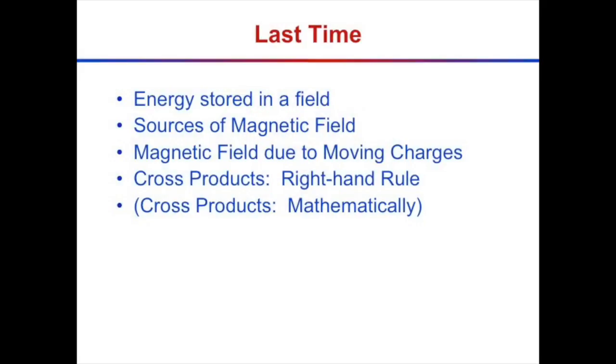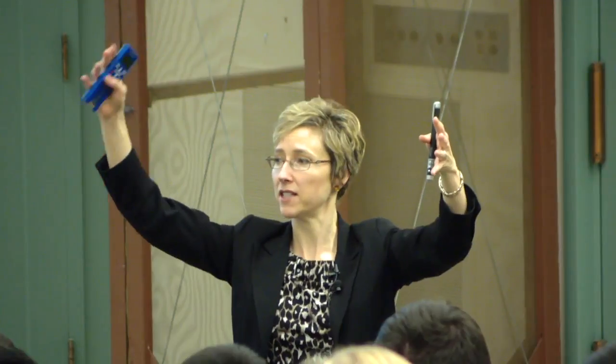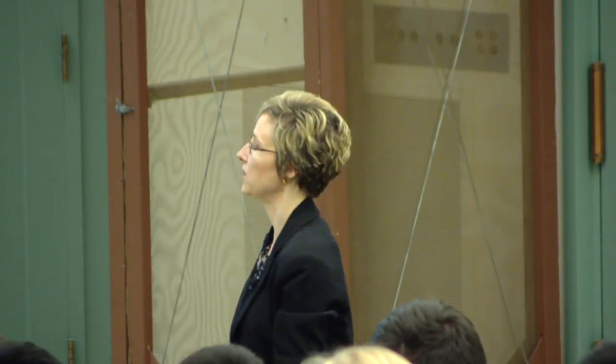Last time we talked about the energy stored in the field. An electric field, just by virtue of existing, has an energy density in it. We saw that if we set things up correctly, we could convert that energy stored in the electric field into work and finally into kinetic energy. We did that by letting two charged plates smack into each other — when the plates were far apart, they stored energy in the electric field, and when released, that energy converted to kinetic energy.